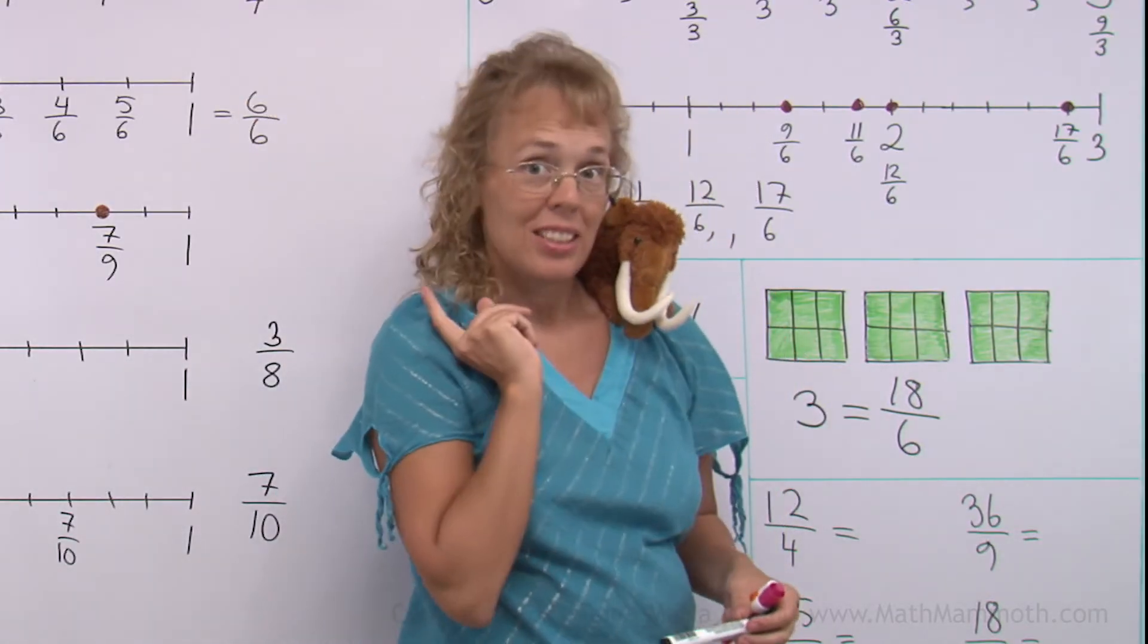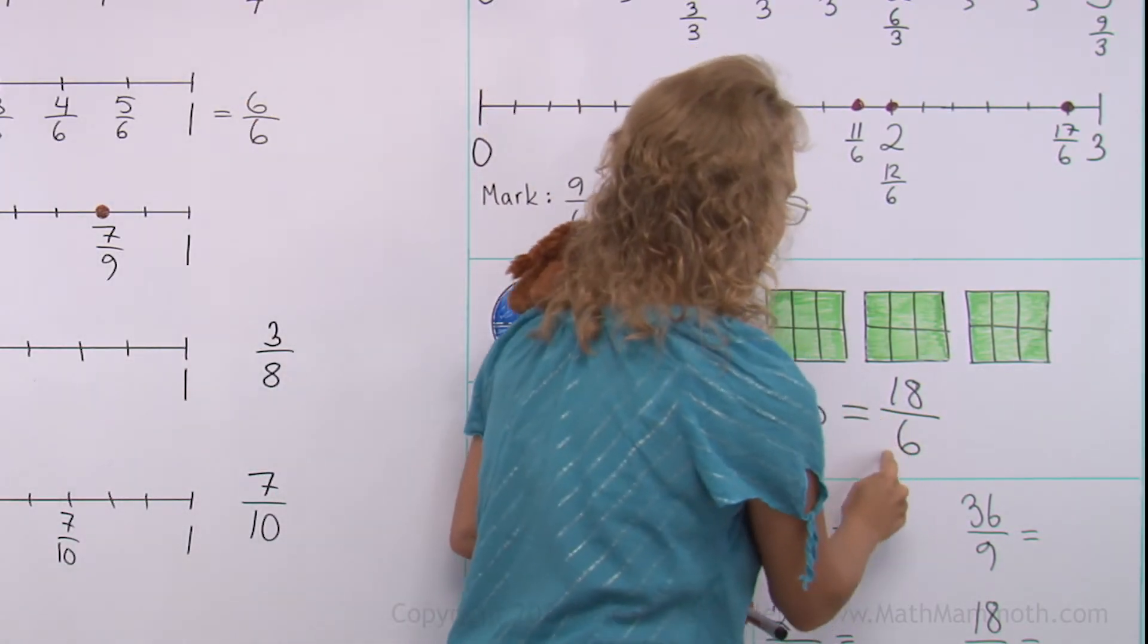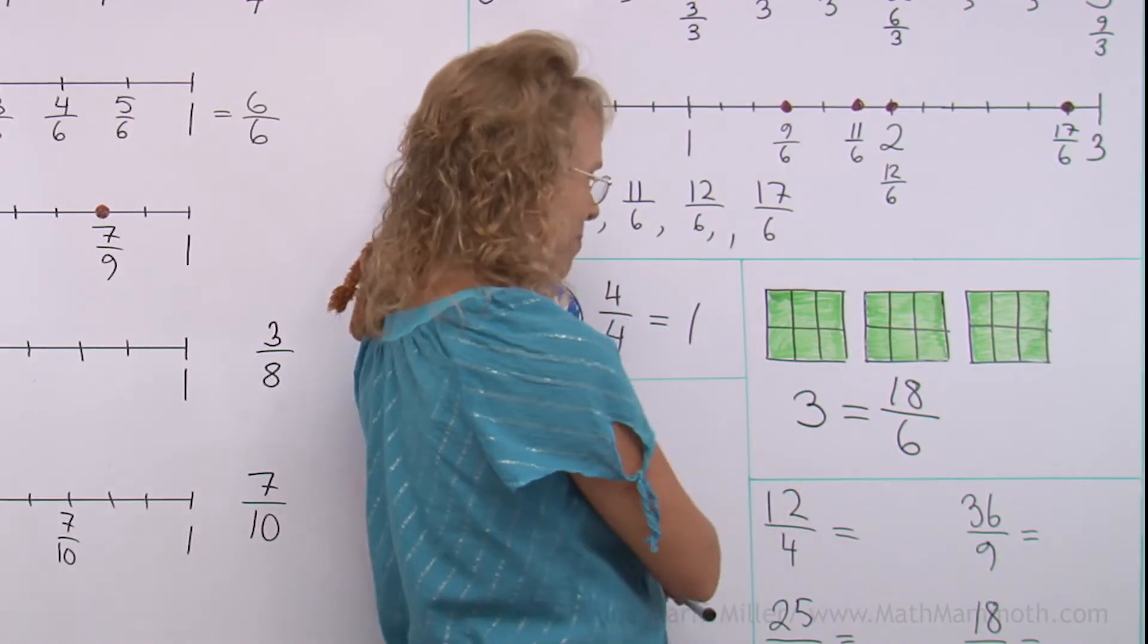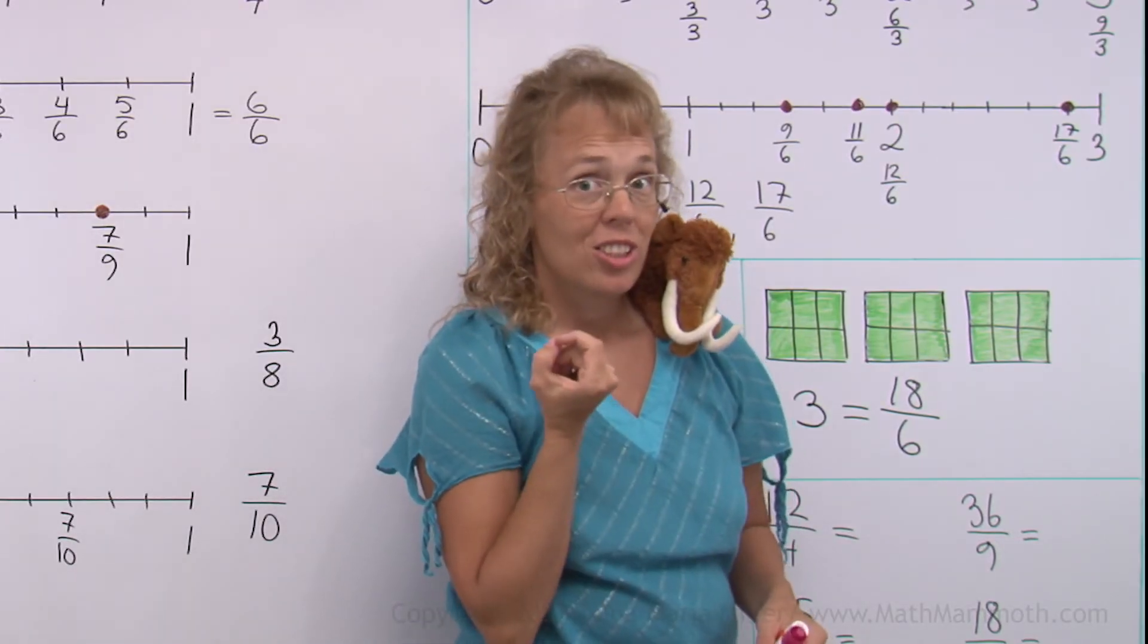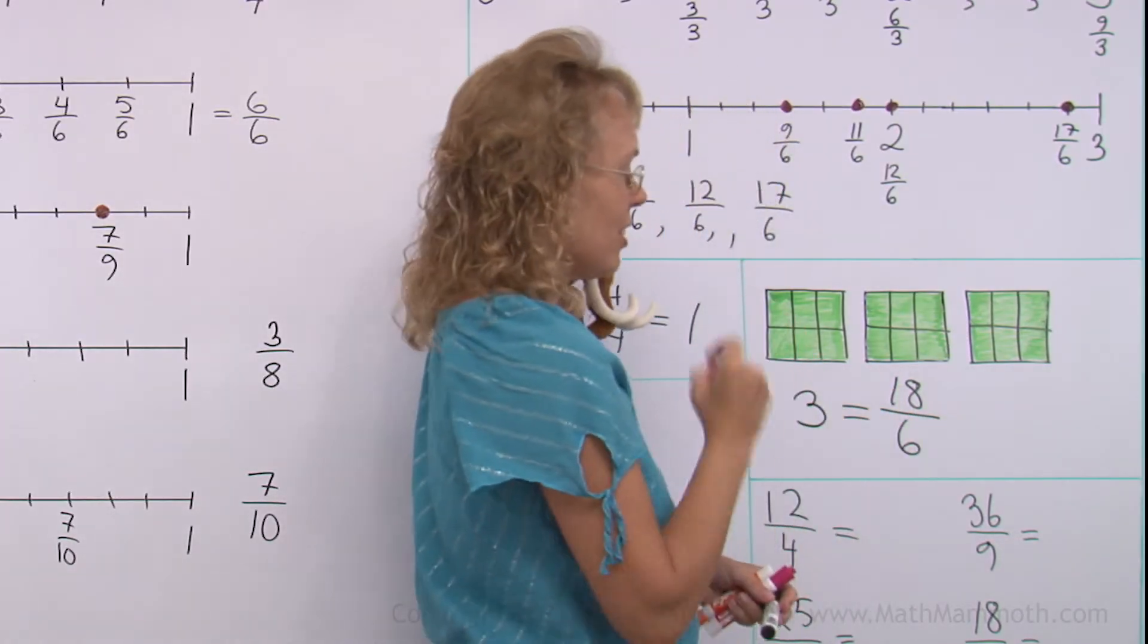But this also works as division. 18 divided by 6 equals 3. You can think of the fraction line, this line here, as a division symbol.